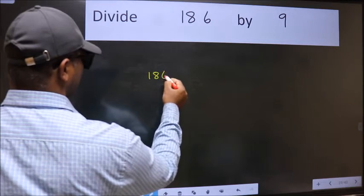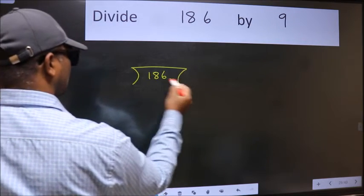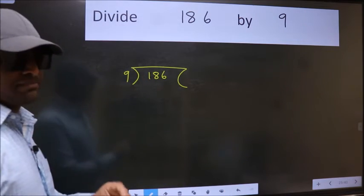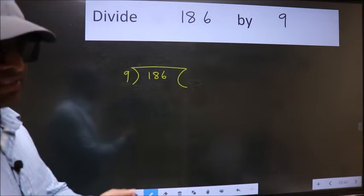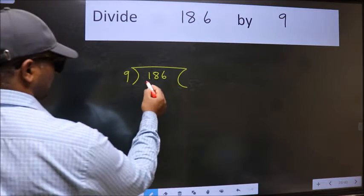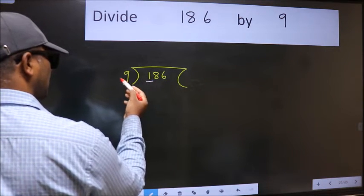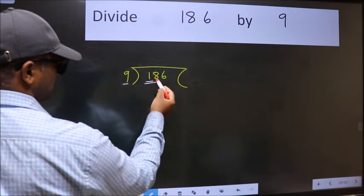186 here, 9 here. This is your step 1. Next, here we have 1 and here 9. 1 is smaller than 9, so take 2 numbers, 18.